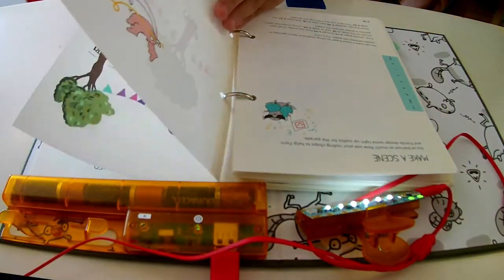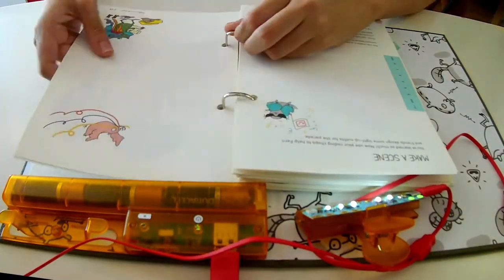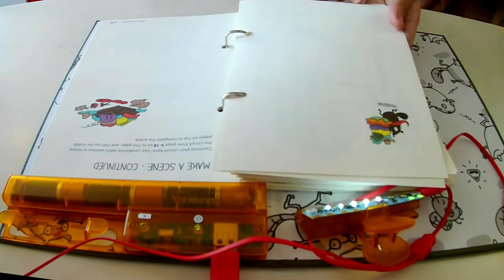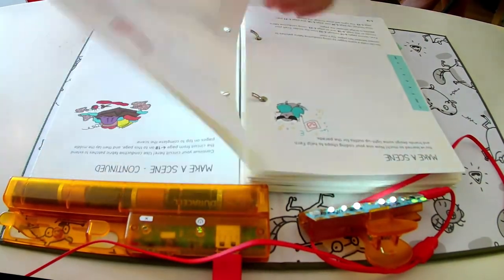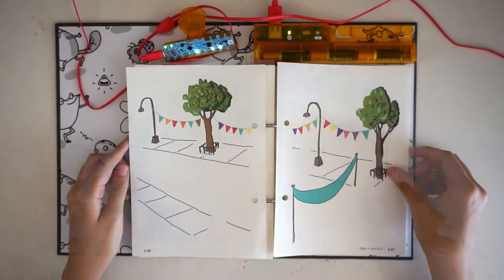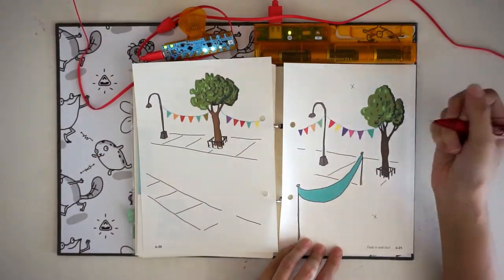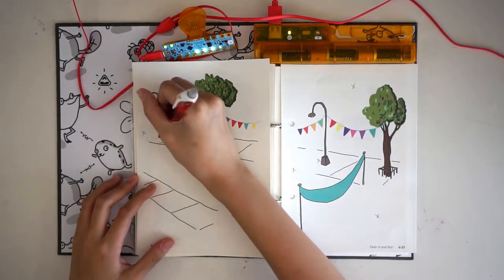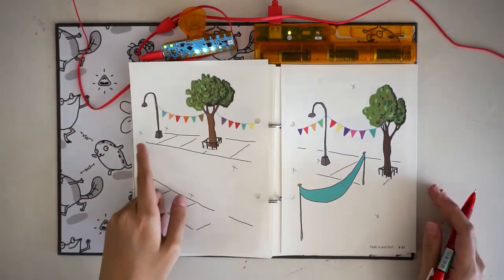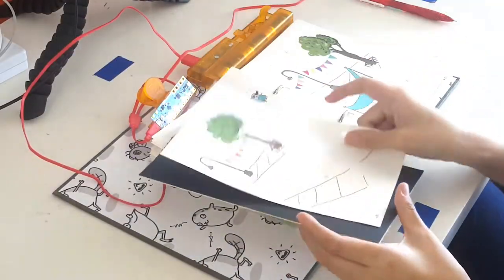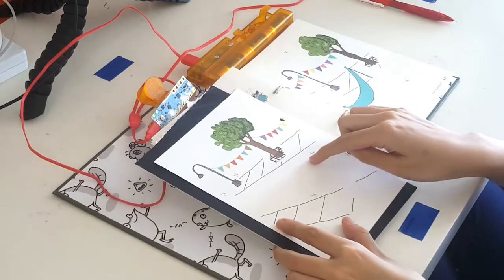We'll also learn how to make a large scene using paper electronics. First, we remove pages 4-19 through 4-22. Then we mark where we want the lights to be. Using a knife or scissors, we cut out holes for the lights.